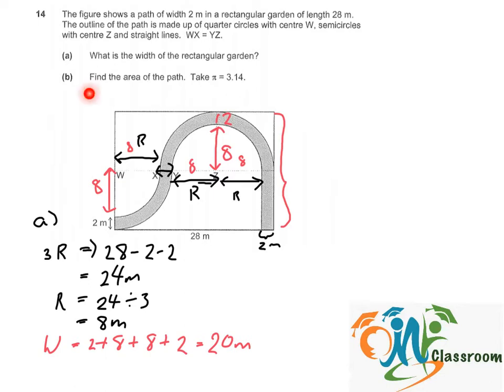Now we move on to part B. Find the area of the path. So as we can see, the area of the path is indicated by the shaded area. And if we were to divide it into 3 parts, it will be this part which is the rectangle, then followed by 1 quarter circle, 2 quarter circle, and 3 quarter circle here.